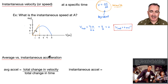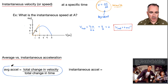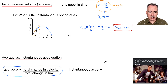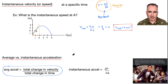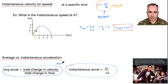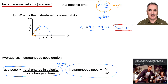Average versus instantaneous acceleration works similarly to what we did with speed. Average acceleration is the total change in velocity over total change in time. Instantaneous acceleration is delta v over delta t — it's just the gradient on a velocity-versus-time graph. These equations are not on your data booklet, so find a way to memorize or derive them.